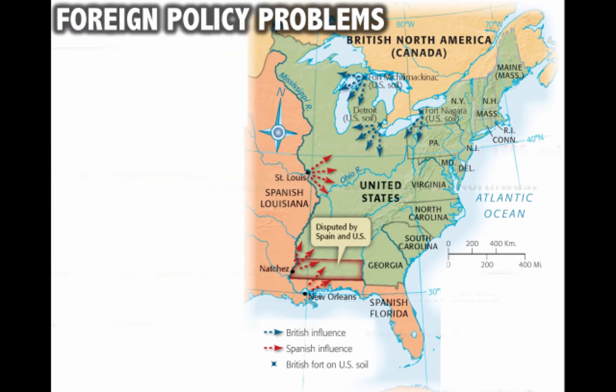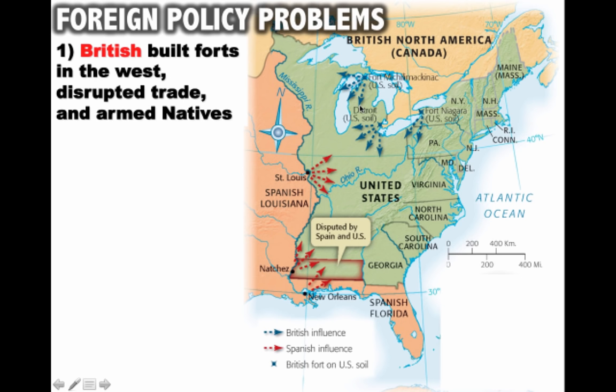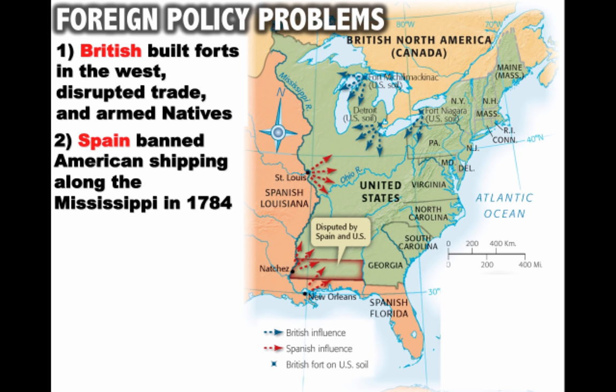This ban on slavery north of the Ohio River is obviously going to lead to further divisions between the north and the south as time goes on. In this early period, the United States also faced many foreign policy problems. One was our old adversary England — they were building forts in the Old Northwest territory, which they were supposed to remove but didn't. There were also disruptions in trade between the United States and England, and England was giving weapons to Native Americans in the region, which were often then being used on Americans on the frontier.